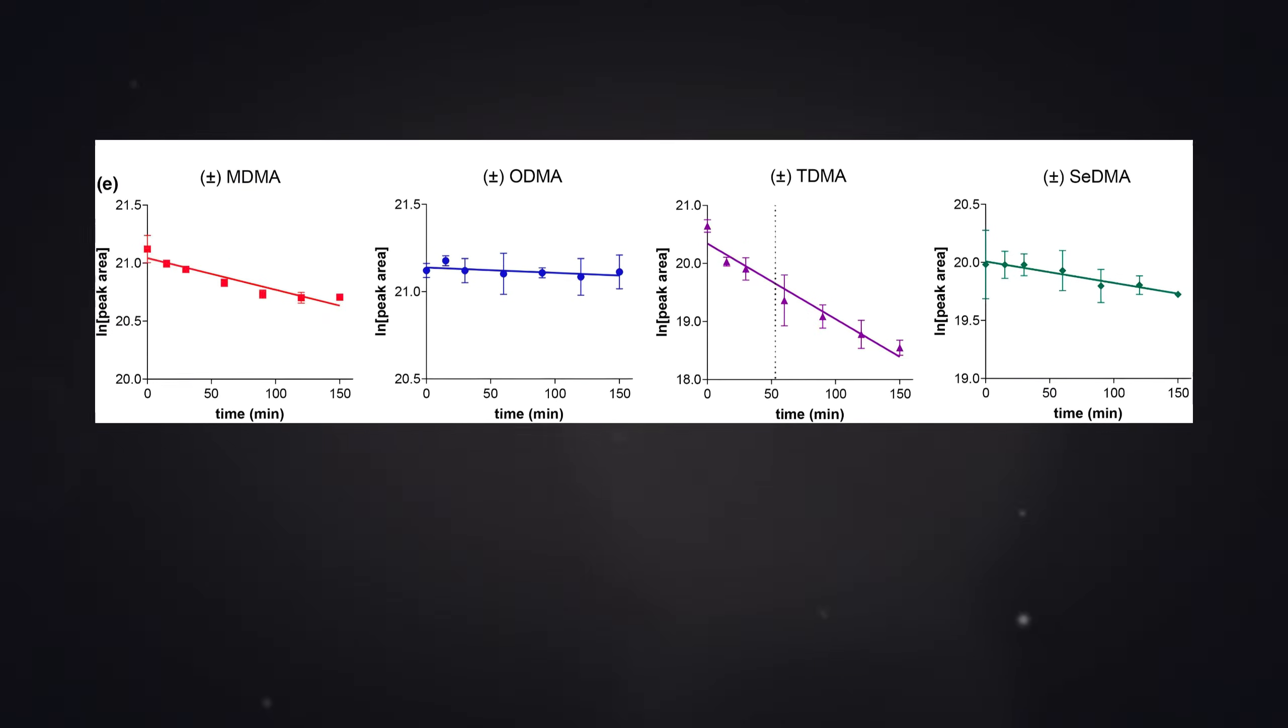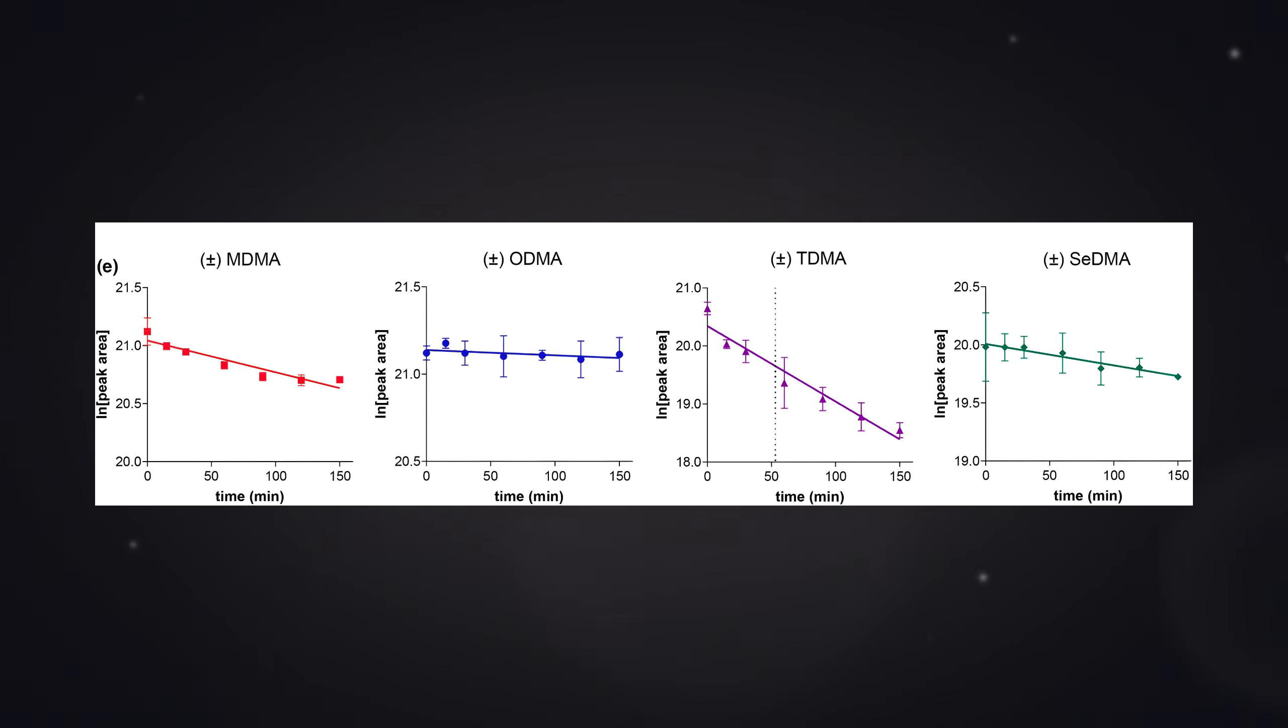This data showed similar clearance levels for OMDA and SEDMA when compared to MDMA. However, the sulfur analogues had a faster clearance for reasons that are not completely clear.